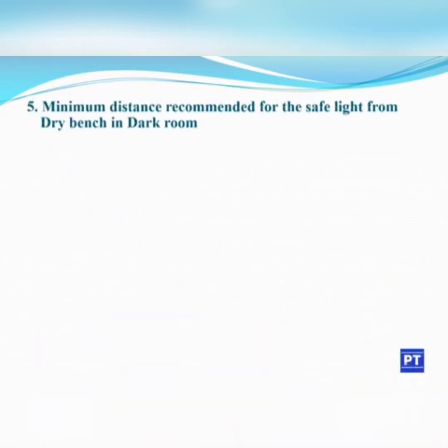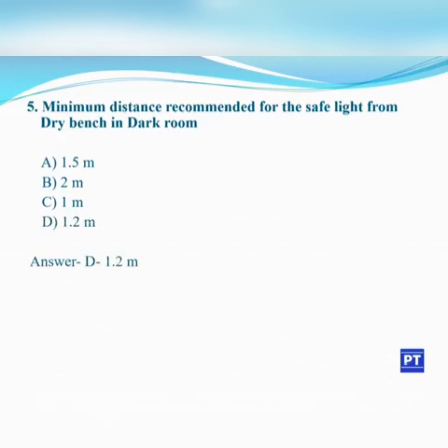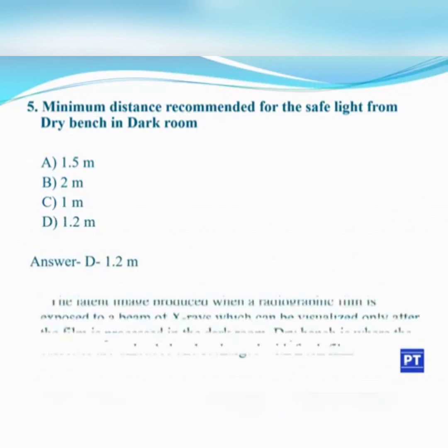Fifth question: what is the minimum distance recommended for the safe light from the dry bench in a dark room? A. 1.5 m, B. 2 m, C. 1 m, D. 1.2 m. The answer is D, 1.2 m.